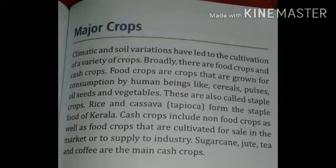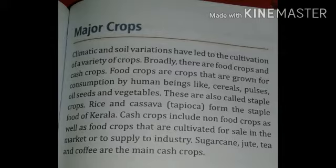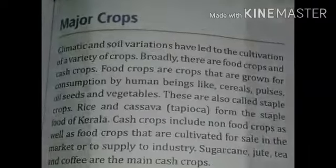Rice and cassava form a staple food of Kerala. Second, cash crops. These include sugarcane, jute, tea and coffee, which are grown to sell in the market or to supply to industries to get cash.